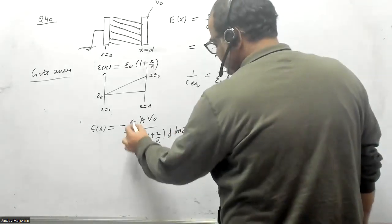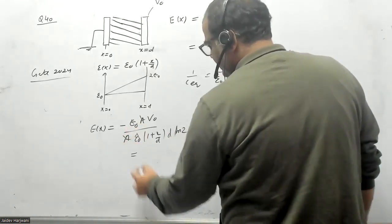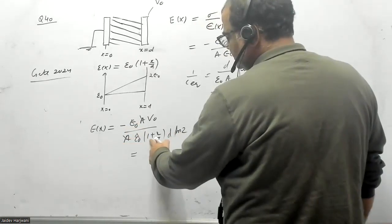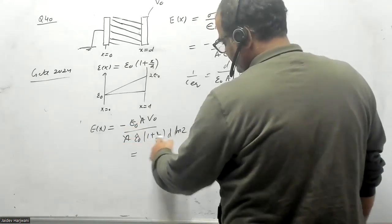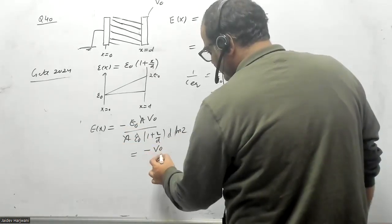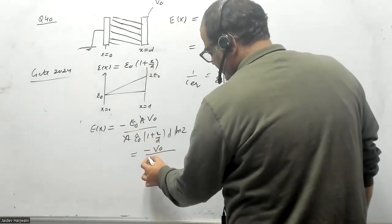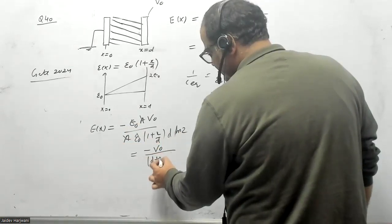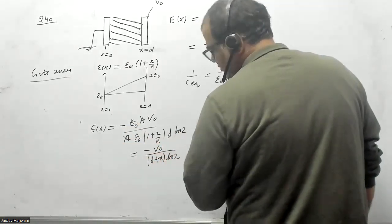ε naught also cancelled out, A already cancelled out. If I take D, so this will also be cancelled out. I will have V naught over D(1 plus X) ln 2.